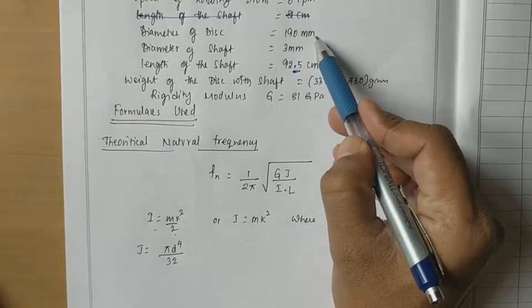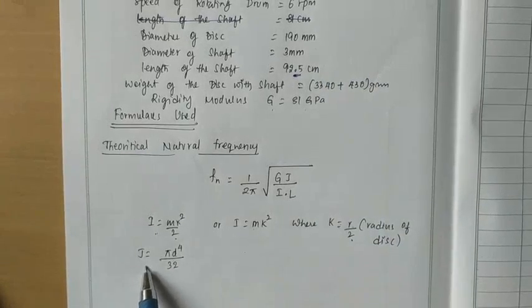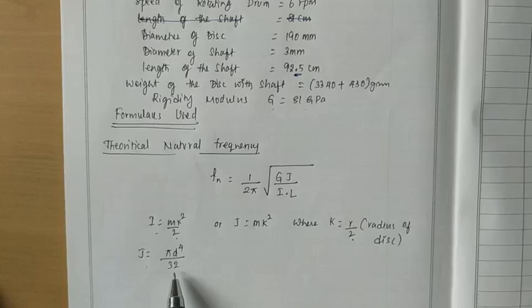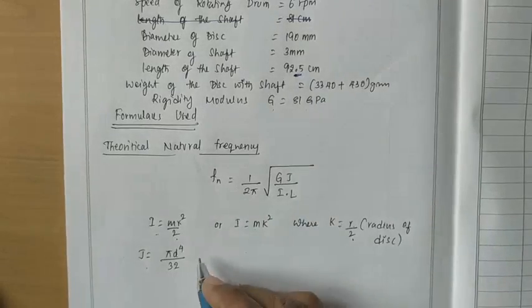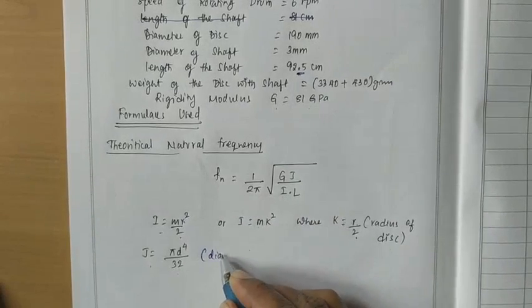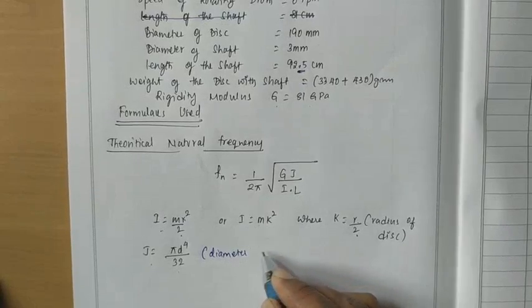We have to consider this diameter divided by 2. And J is π d to the power of 4. Here, we need to make use of diameter of the shaft for this calculation. So we need to consider diameter of the shaft.